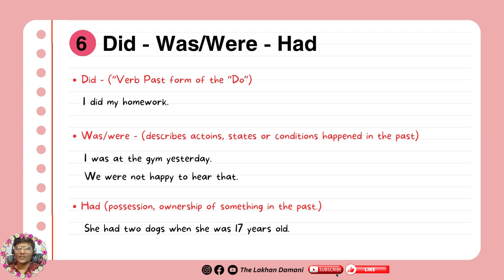Number six: where to use did, was, were, had. Did is the past form of do — it's an auxiliary or helping verb. Example: I did my homework. Negatively: he didn't speak to him, he didn't tell me, he didn't do his homework. Was and were are used to describe actions, states, and conditions that happened in the past. Example: I was at the gym yesterday. We were not happy to hear that.